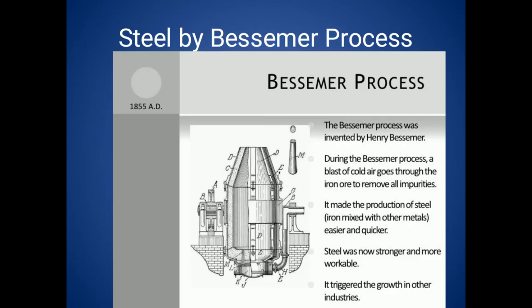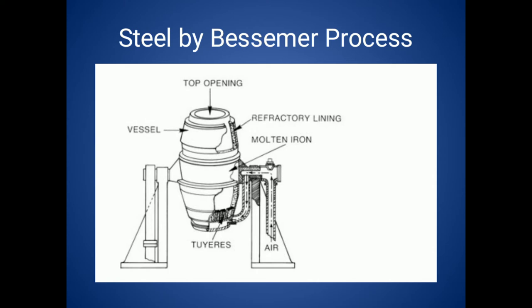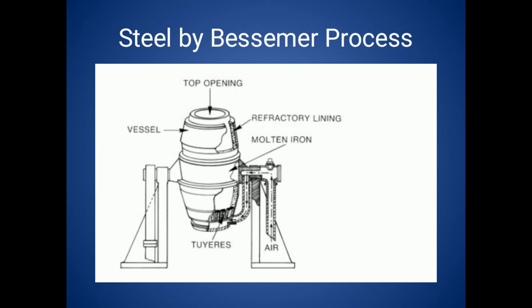Coming to the Bessemer converter process. In this method we refine the molten pig iron. The body of the Bessemer converter is made up of a steel plate, lined with silica bricks. The top of the converter is open and the bottom contains tuyeres to supply hot air as well as gases.